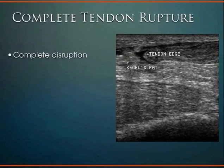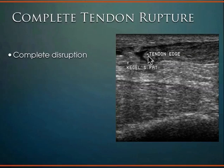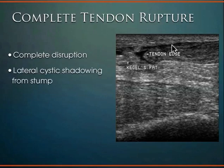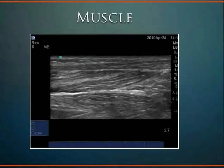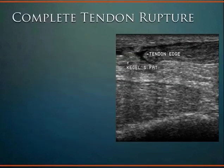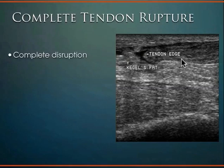For a complete tear, you can see the leading edge of the tendon with obvious disruption, retraction of the tendon, and a localized fluid collection. Taking that through range of motion, you would basically see the tendon stub retract — you can see that dynamically, which is quite helpful.